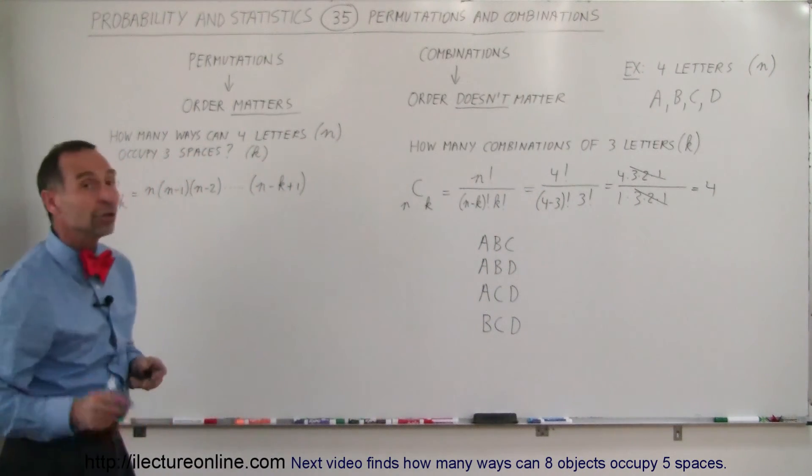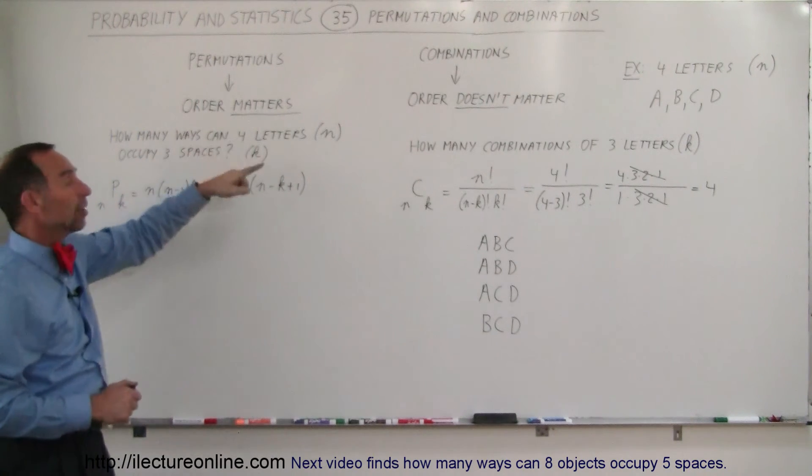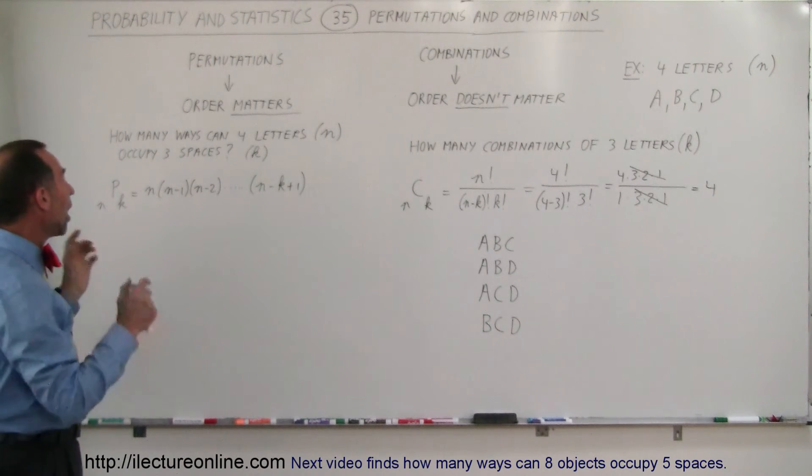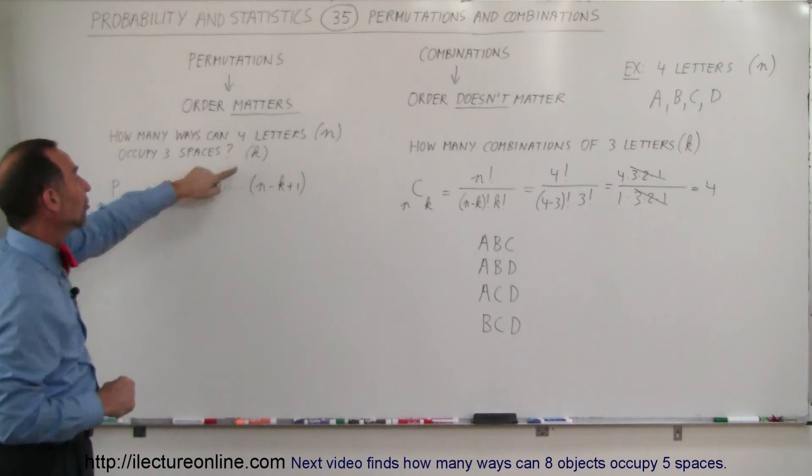Now, how do we find the number of permutations? You have four letters, and you want to know how many ways can four letters, N being four, occupy three spaces. And the order does matter in this case, because we're looking for permutations.